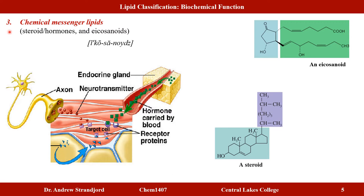The third class of lipids are the chemical messenger lipids, which include steroids, hormones, and eicosanoids. Although steroids and eicosanoids have very different chemical structures, they share a similar function: carrying messages from one part of the body to another, often through the bloodstream. Cells release these chemical messengers to tell other cells to contract muscles, send electrical signals, and so on.